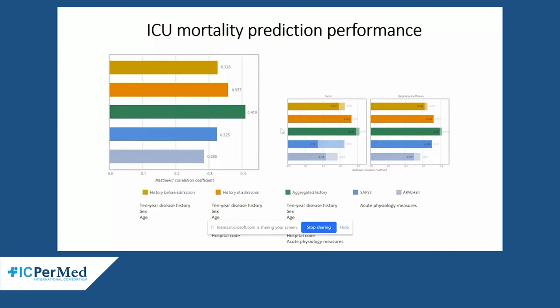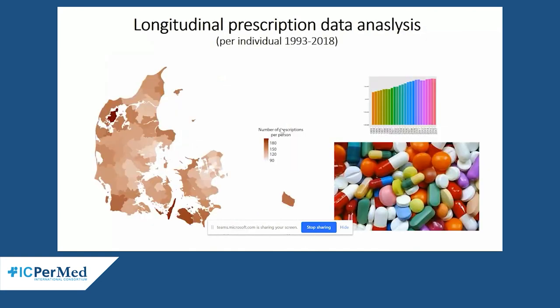When you combine disease history with vitals, you get even better performance — shown as the green bar. We should be better at using the patient's own historic longitudinal data in treatment of that specific patient, giving something back to the patient rather than just using it prospectively as most epidemiology has done.